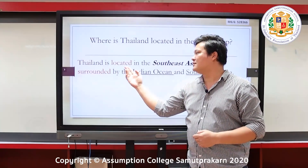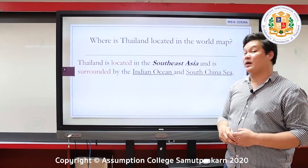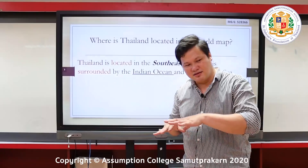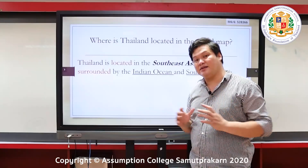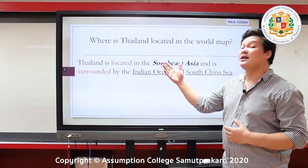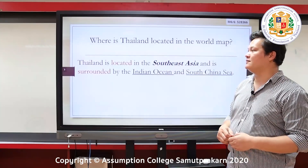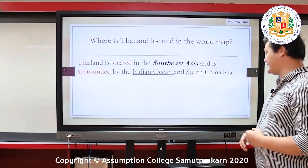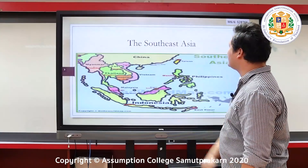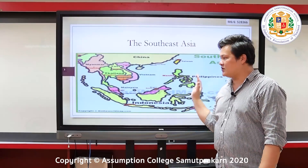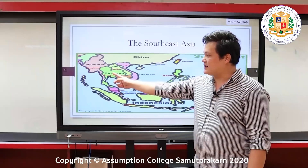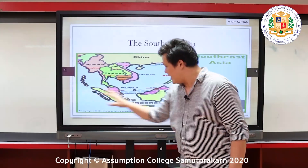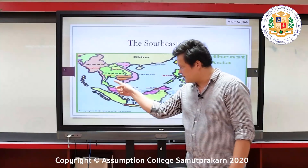Thailand is located in Southeast Asia. It is surrounded by two bodies of water: the Indian Ocean and the South China Sea. I'm going to show you a map. In a world map, this is Southeast Asia — there are 10 countries that you can see. Thailand is located in Southeast Asia, surrounded by the Indian Ocean and the South China Sea, with the Gulf of Thailand and the Andaman Sea.